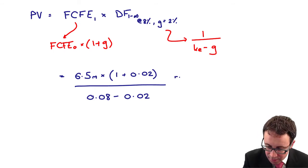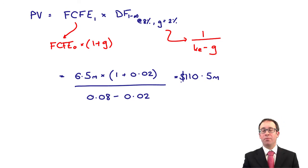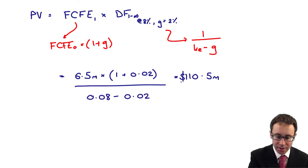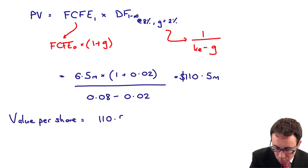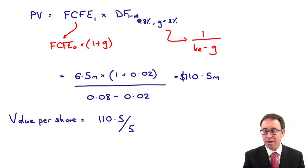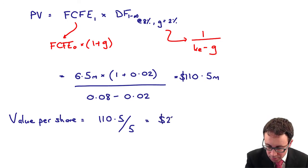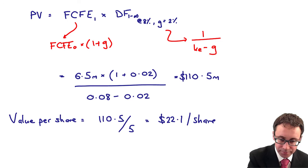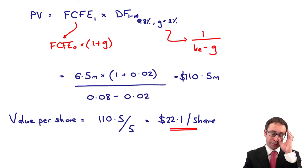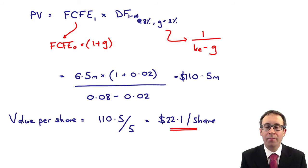Tap it onto your calculator and what do you get? You get 110.5 million dollars. That is the value of the equity. To work out the value per share, it's the 110.5 million divided by the 5 million shares that were in issue. That works out as $22.1 per share. Excellent. Hopefully you're all happy with that one.